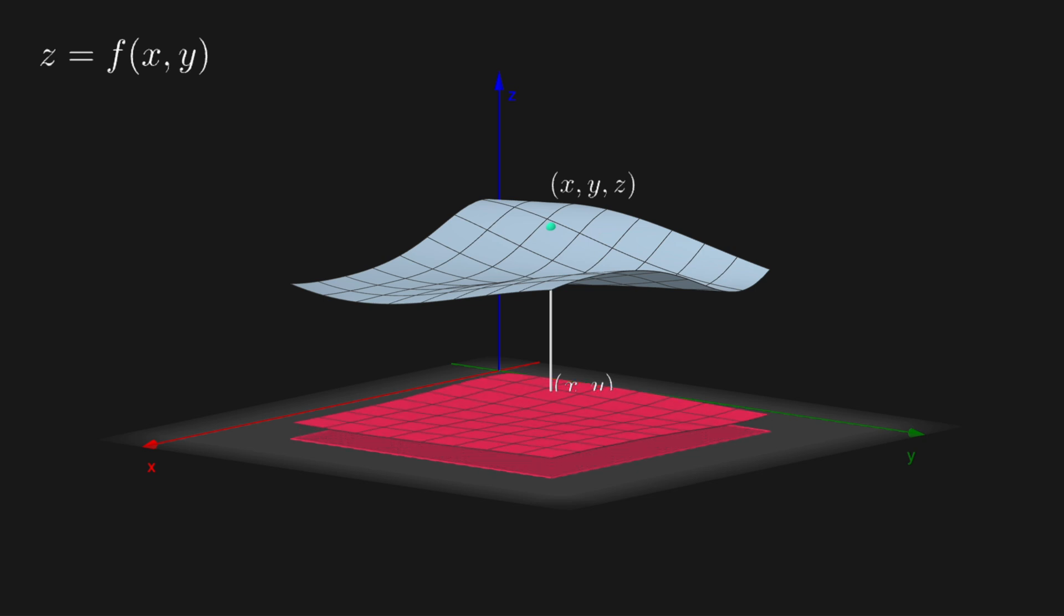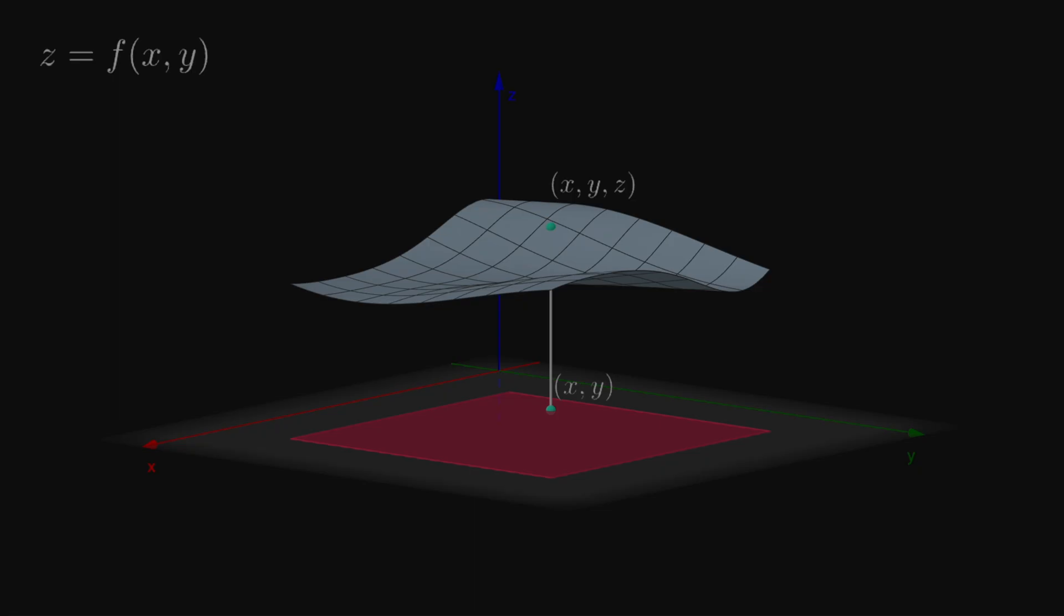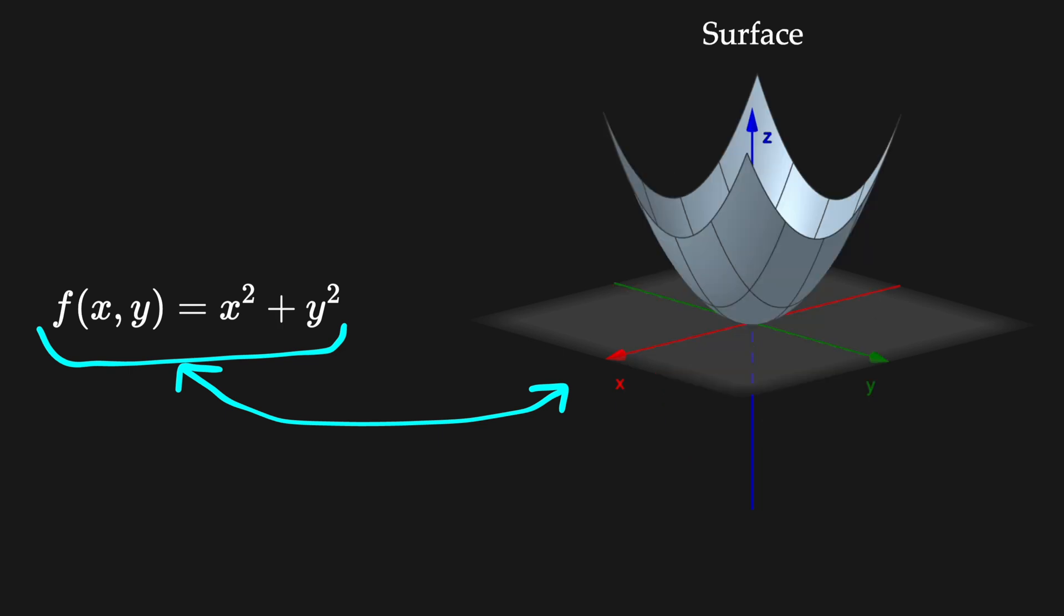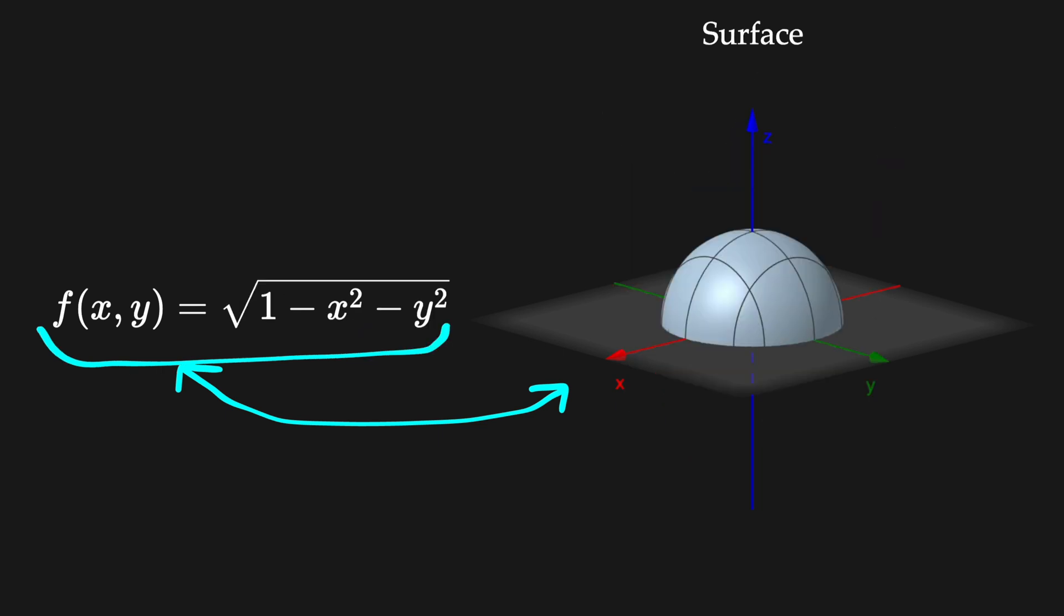Geometrically we can also interpret this as a transformation from the domain to the surface in the space. For every function of two variables there is a corresponding surface like this paraboloid or this hemisphere, and the list goes on.